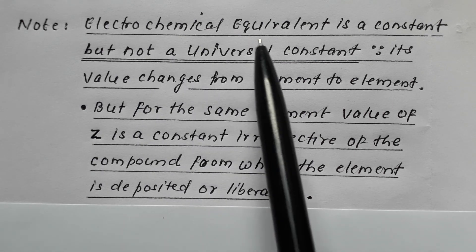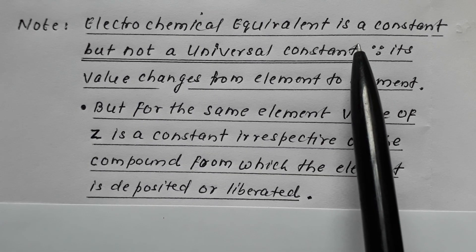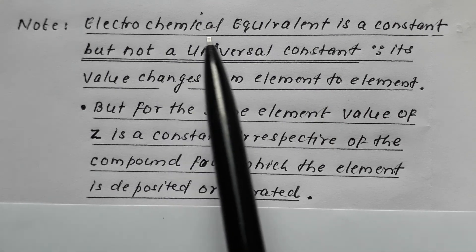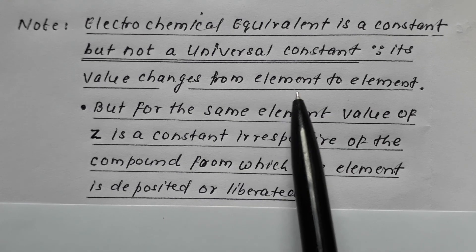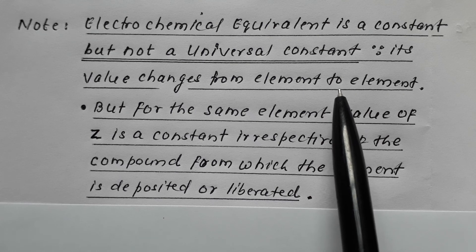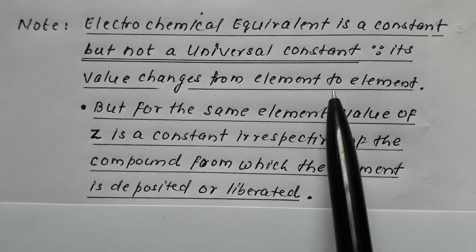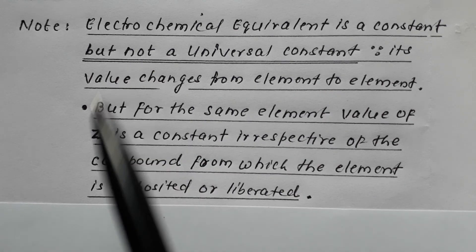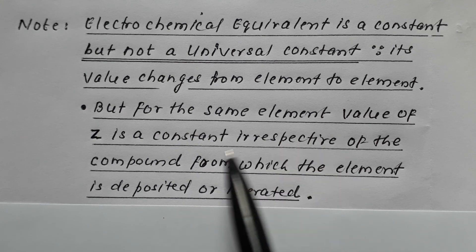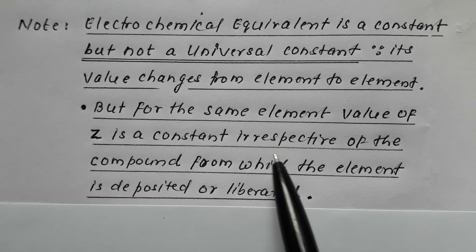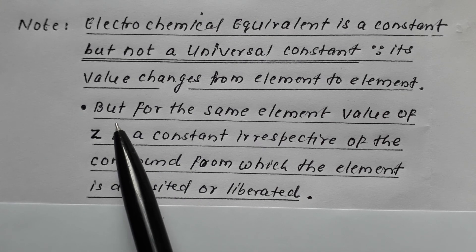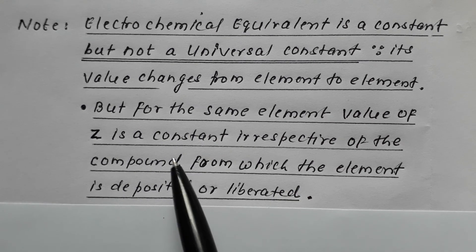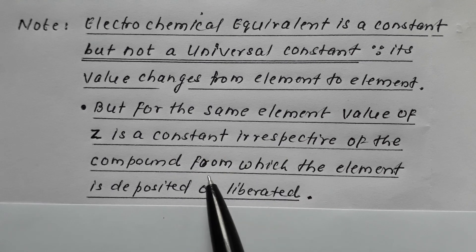It is very important to note that electrochemical equivalent is a constant but not a universal constant, since its value changes from element to element — every element has a different value of Z. However, for the same element the value of Z is a constant, irrespective of the compound from which that element is deposited or liberated.